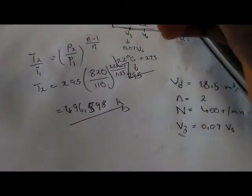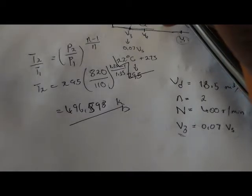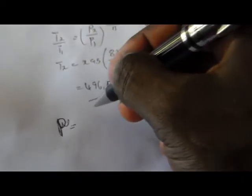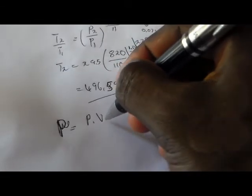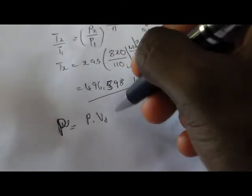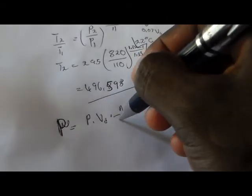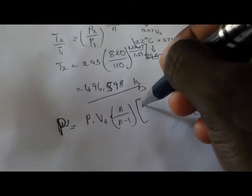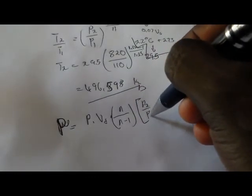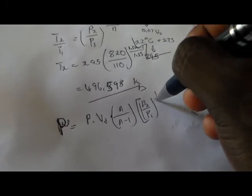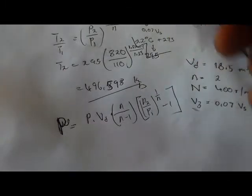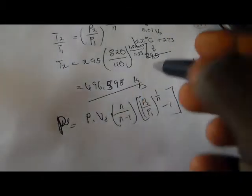Then our last question: calculate the power required to drive the compressor. So the formula is: pressure number one multiplied by volume delivered, multiplied by N over N minus one, to the power of pressure number two over pressure one, then to the power one minus one over N, minus one. This is the formula to calculate our power.